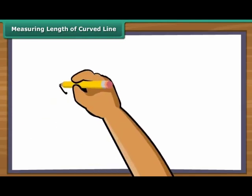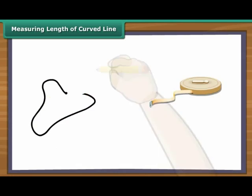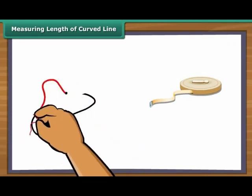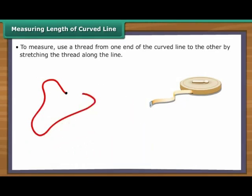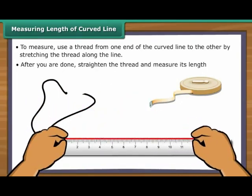Measuring Length of Curved Line. To measure a curved line, the standard measuring tape will not be enough. You will have to use a different mechanism to arrive at the correct length of the curved line. To measure, you will use a thread along the line of the curve. You will use the thread from one end of the curved line to the other end by stretching the thread along the line. After you are done, straighten the thread and measure its length. You will know the length of the curved line accurately.